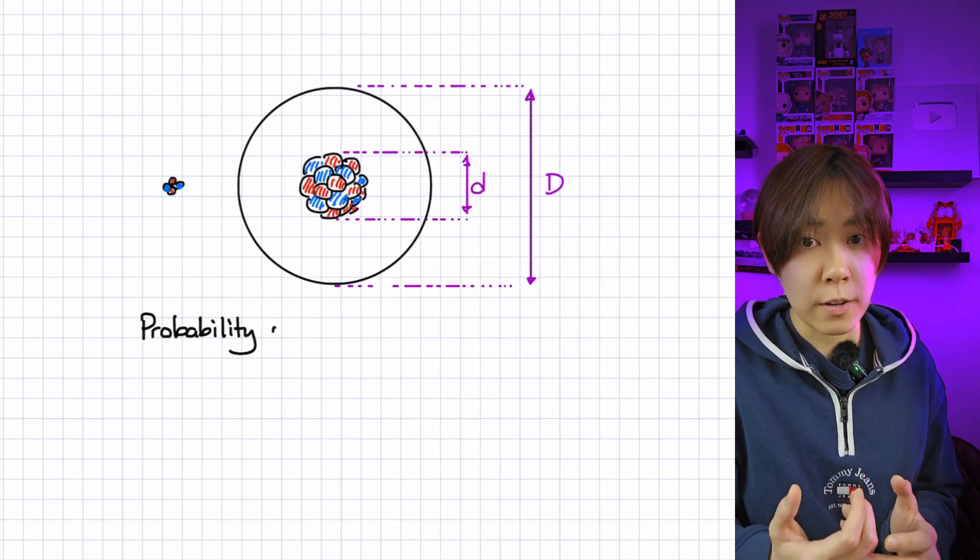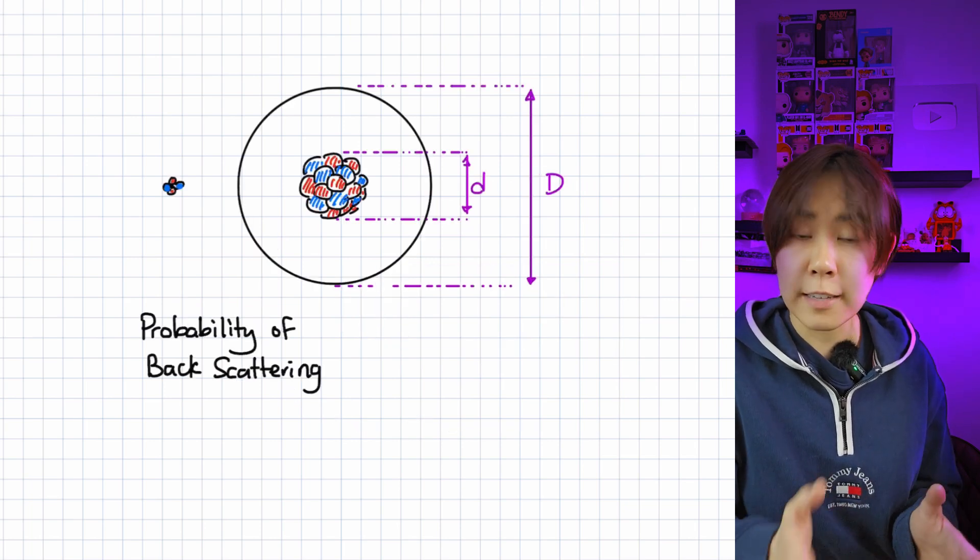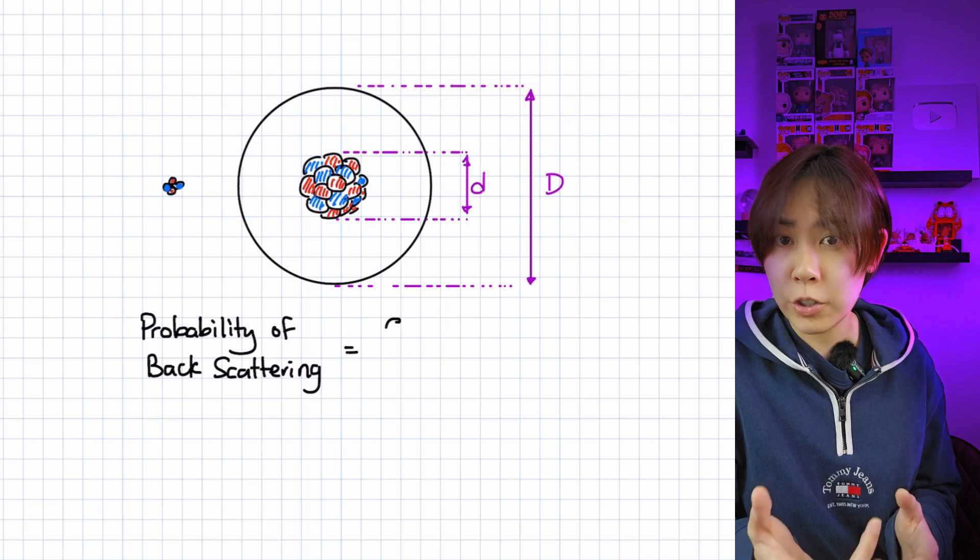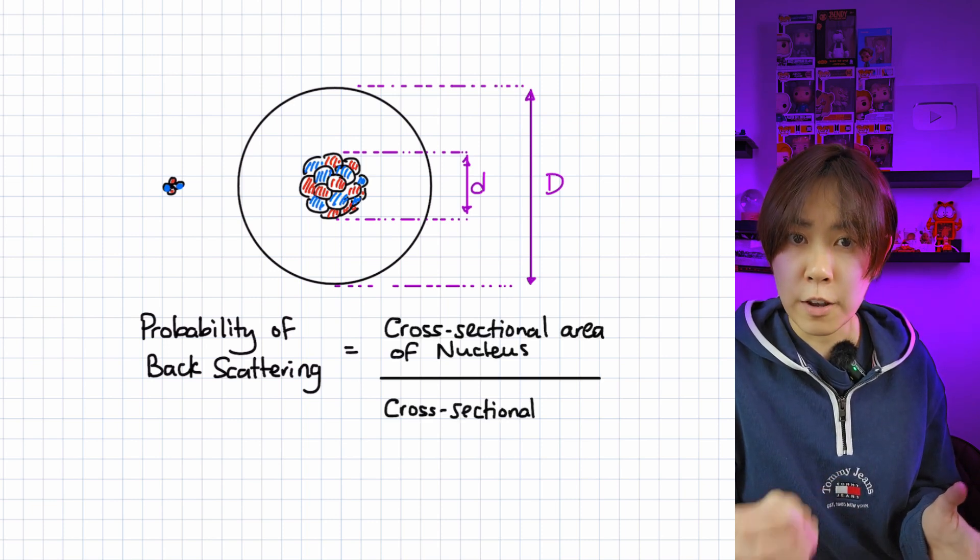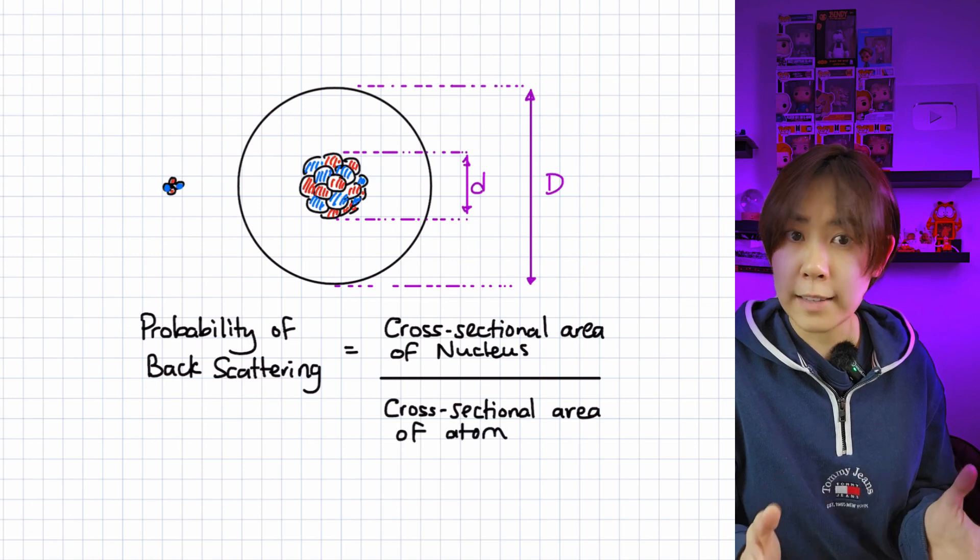Now we can write an expression for the probability of backscattering. That will be a ratio between the cross-sectional area of the nucleus and the cross-sectional area of the whole atom.